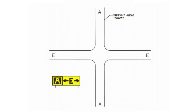Here is another view of a taxiway and what a pilot would see if they were on taxiway A. As you can see, the E with the arrows pointing right and left indicate the intersecting taxiway E.